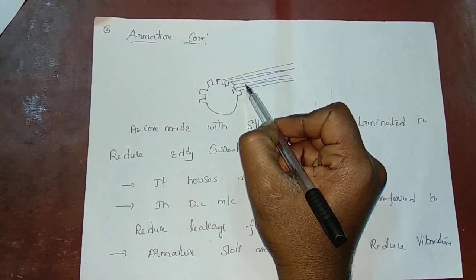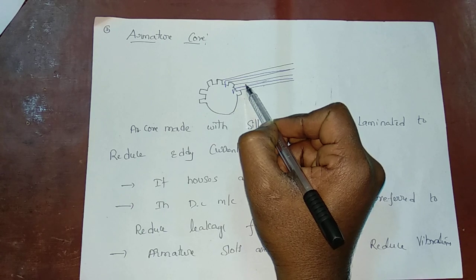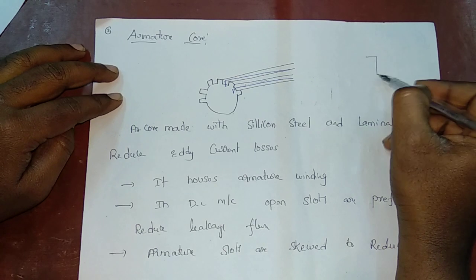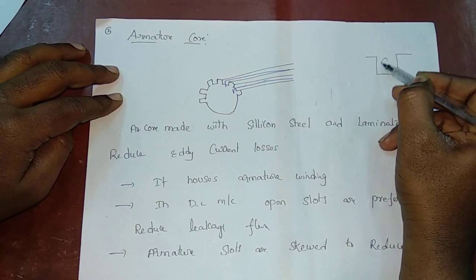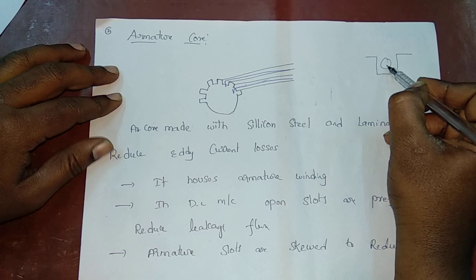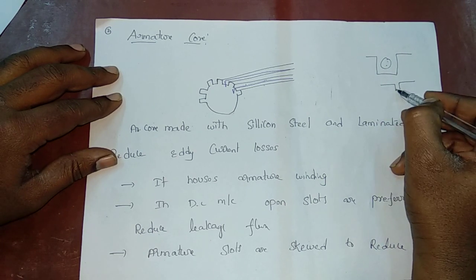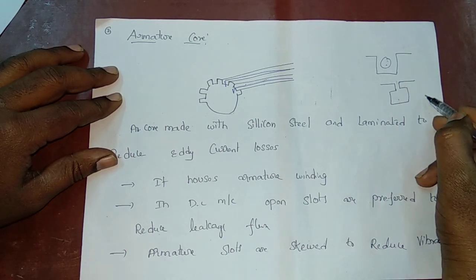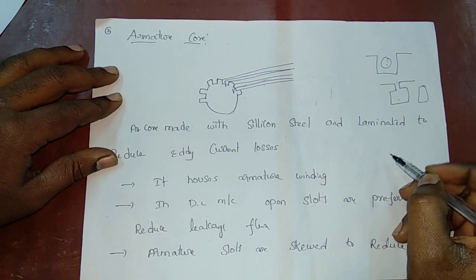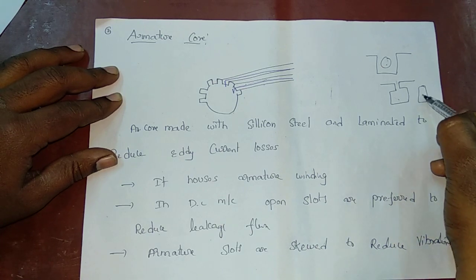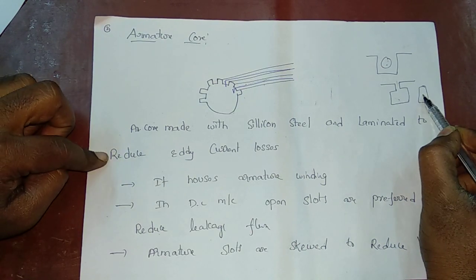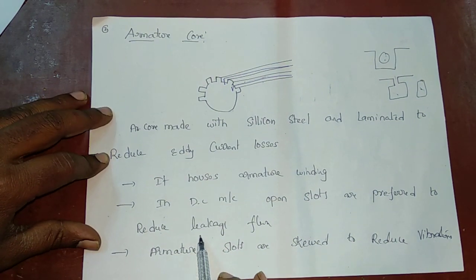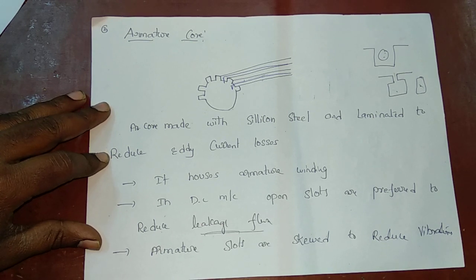There are three types of armature slots: open type, closed type, and semi-open type. When you use open type slots, you can place the winding easily. In DC machines, open slots are preferred to reduce leakage flux.